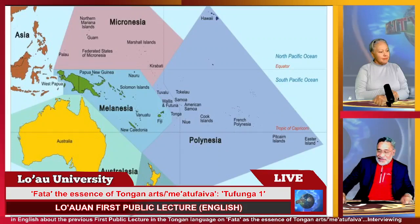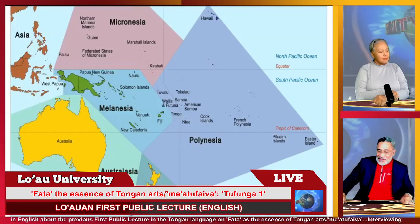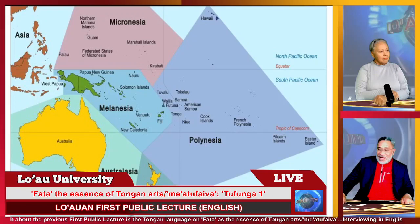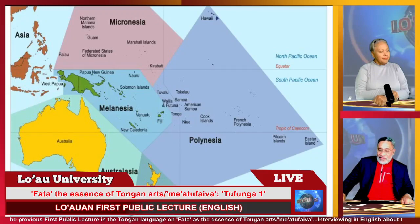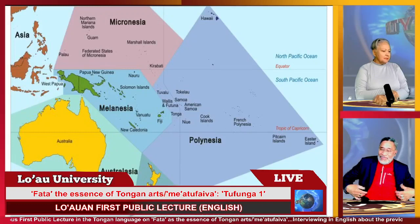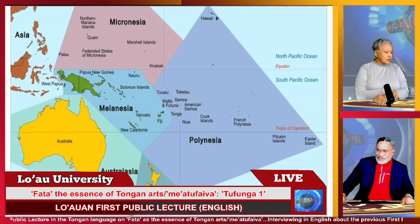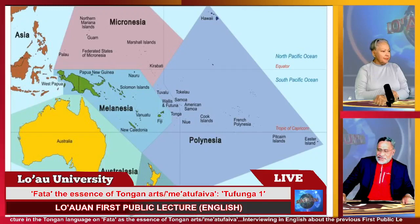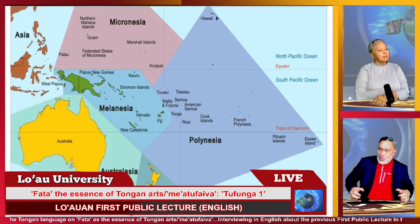Our topic is Fata, the Essence of Tongan Arts — material arts. Fata is an old concept, and it started when we started to build our society in Tonga, or the societies of the islands. It relates to migration — that's why I showed the earliest migration map. This is a shared concept throughout Micronesia, Melanesia, and Polynesia. Fata was used by all these peoples — like in building houses and in carrying a high chief. Fata can also be a universal concept.